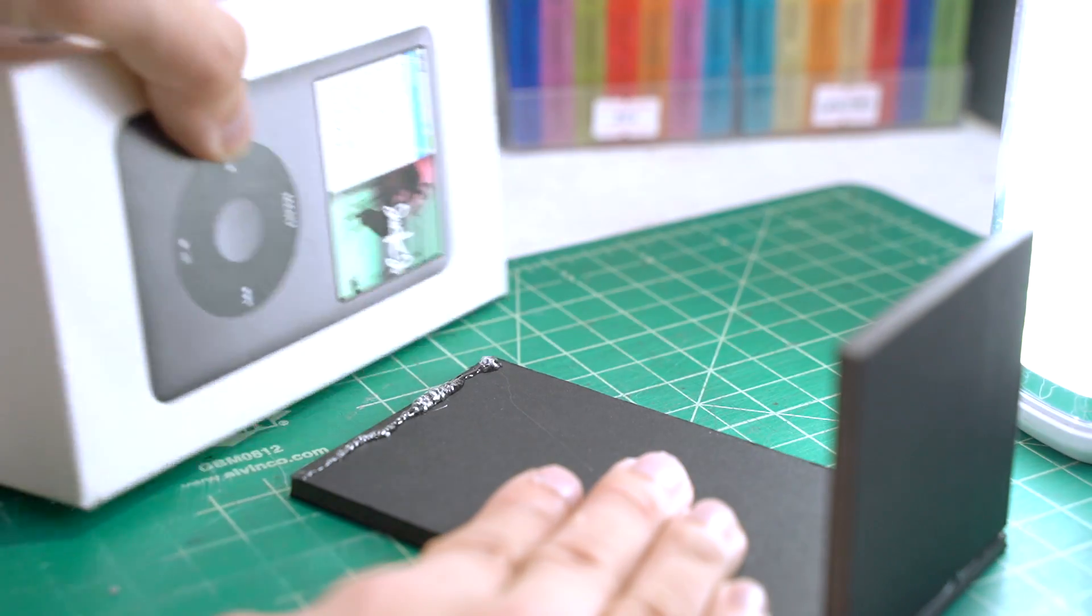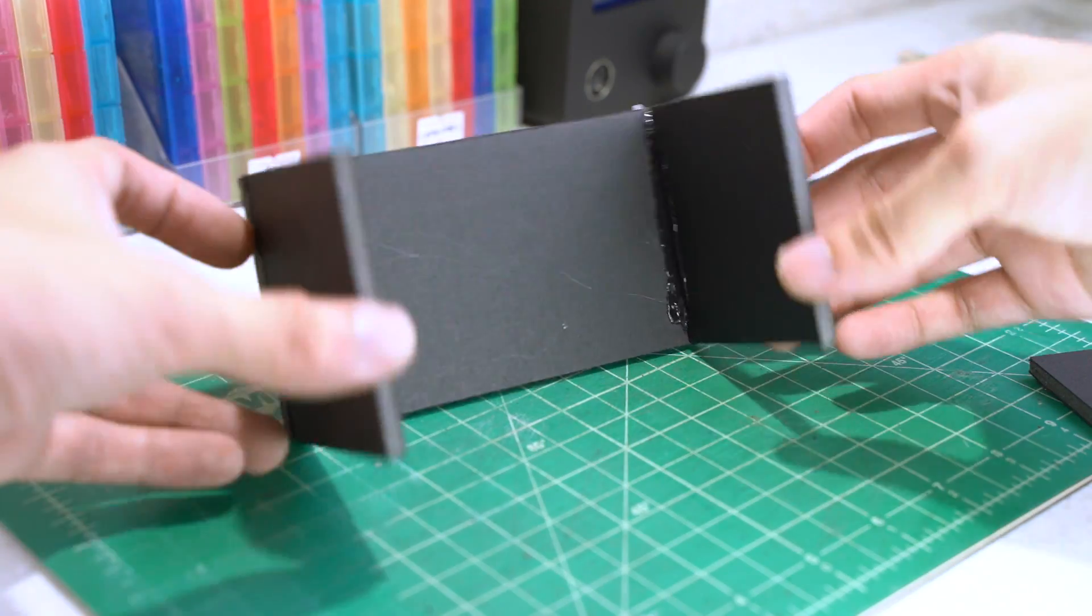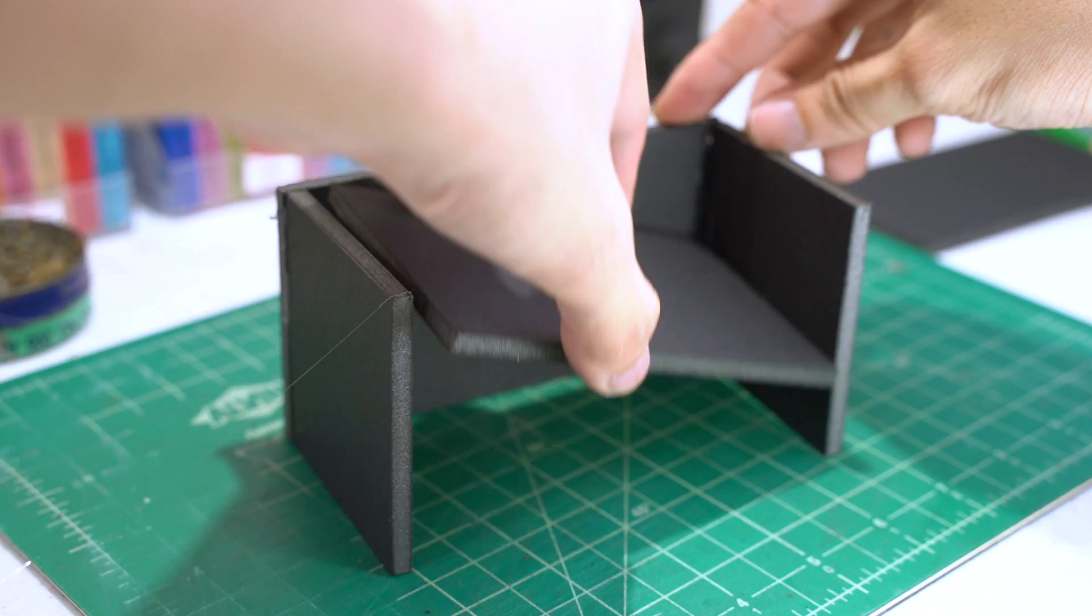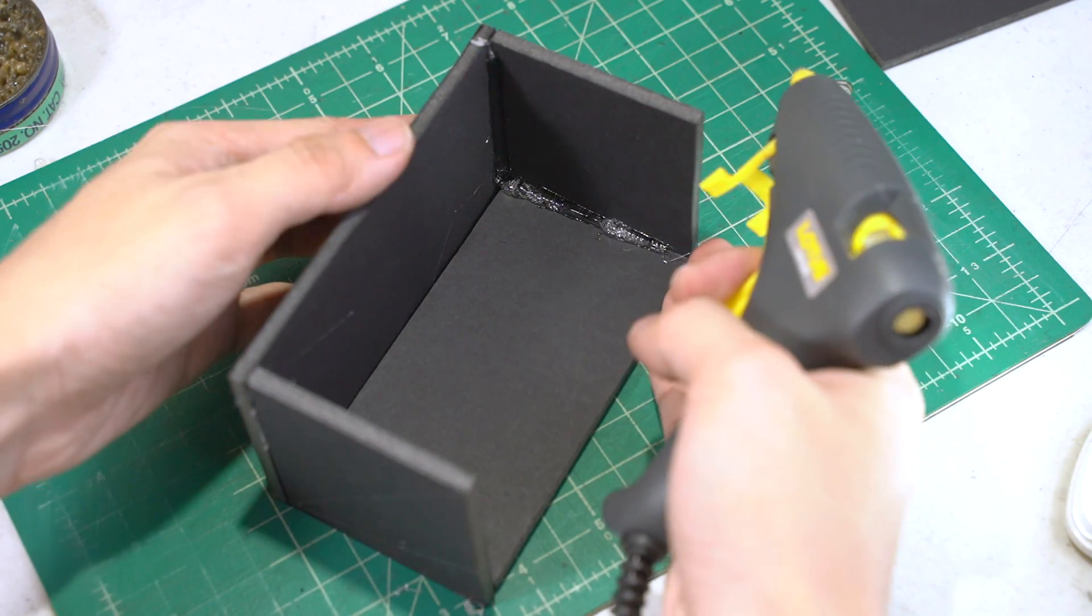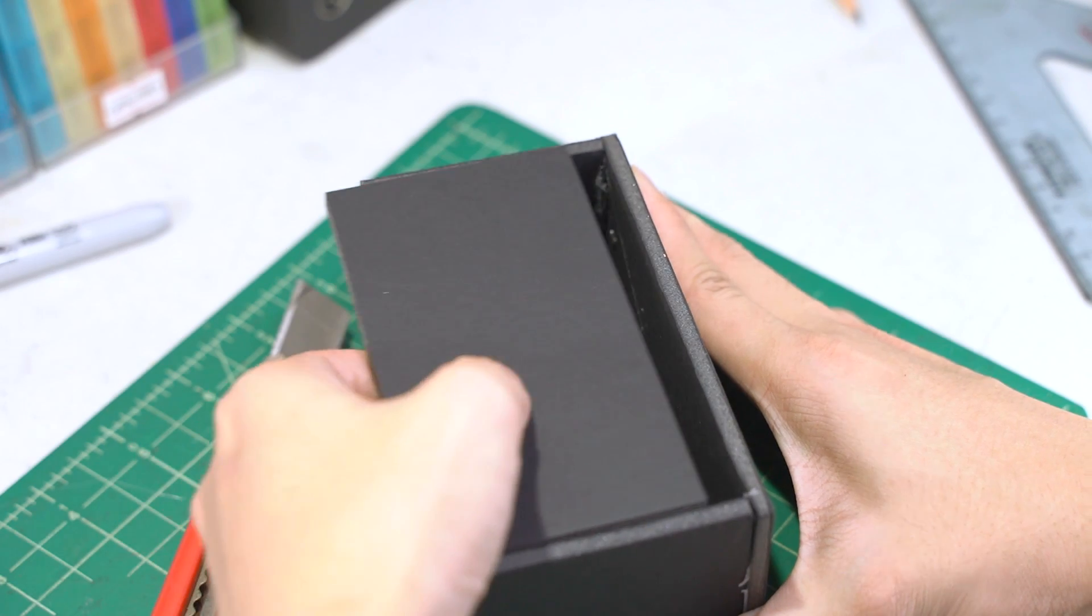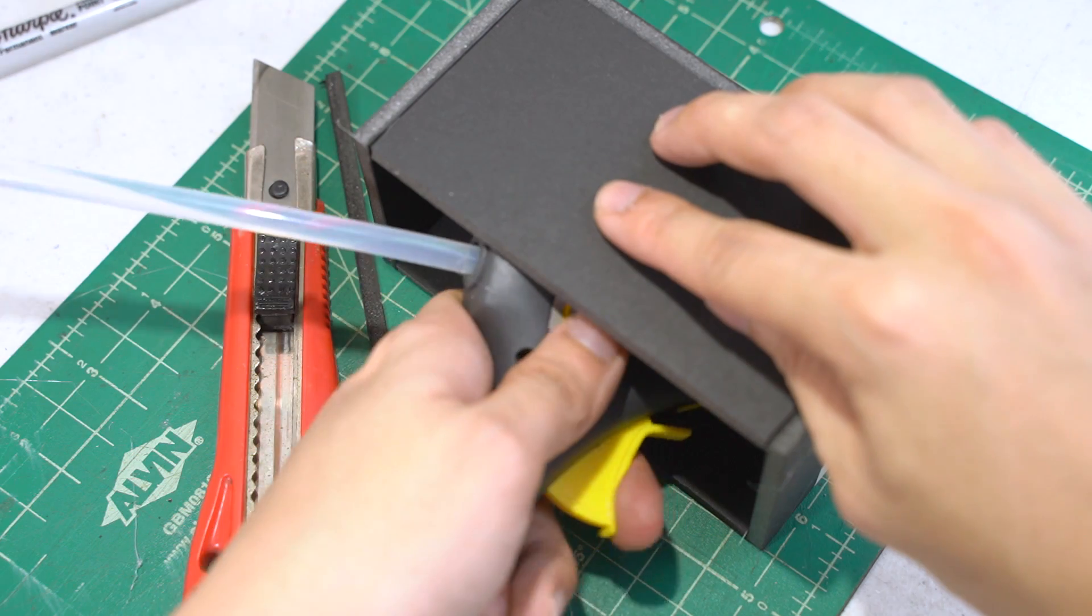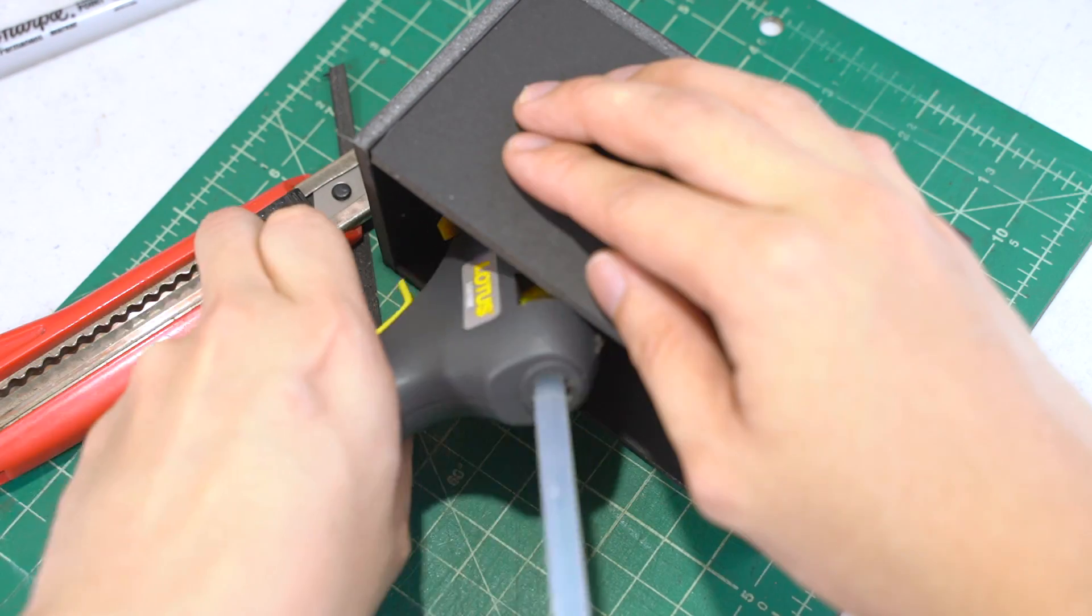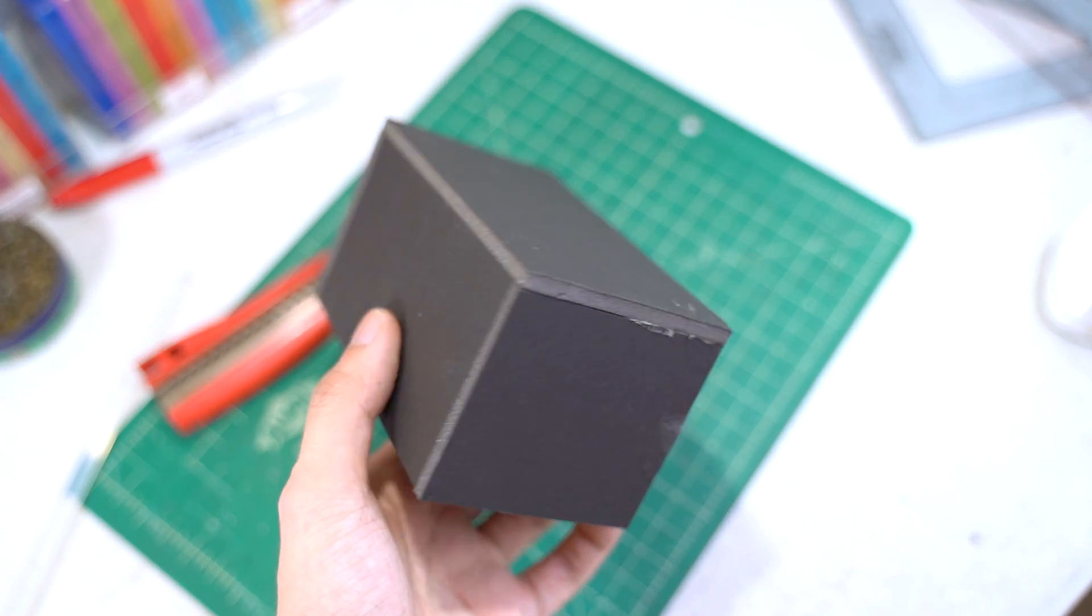If you're using foam board, be sure not to put too much hot glue because the styrofoam sandwich in between the paper could melt. Now let's install the front and the rear side panels. Then again, you can join the edges by using some hot glue. And now you've built the top portion of the enclosure.